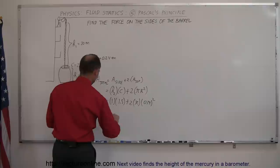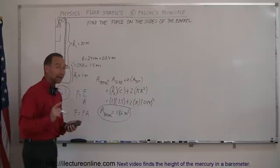So the total surface area equals 1.86 square meters, and then we multiply that times the pressure of the fluid inside.